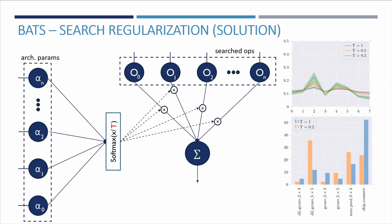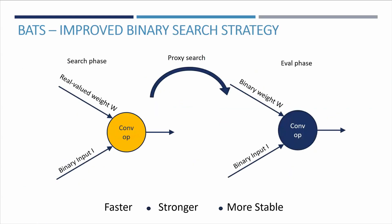Furthermore, notice that on average the architecture with T equals one has more than 50% of search connections with identity. As opposed to this, as we drop the temperature, the network includes significantly more convolutional layers, in particular larger ones in the network.